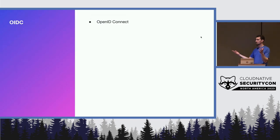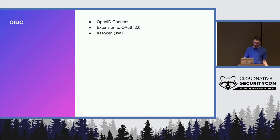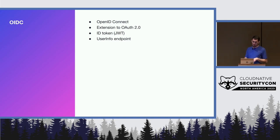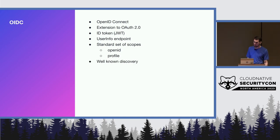Enter OIDC — OpenID Connect. OpenID was another form of federated authentication that got replaced with OAuth and then brought back through OIDC. It is an extension to OAuth, a thin layer built on top of it. It uses JSON web tokens and introduces the concept of an ID token — along with the access token you get back an ID token that contains information about the user as a standalone. It also introduced the standard user info endpoint: everything OIDC-compatible should have a user info endpoint you can hit with the access token to get back identity information. It comes with a standard set of scopes; the OpenID scope is pretty much the only magic behind getting an OIDC token. And OIDC has well-known discovery.